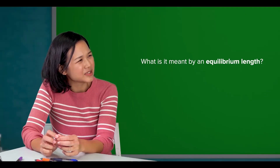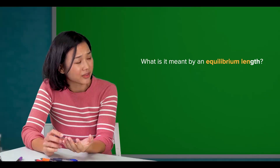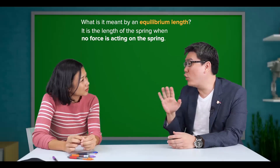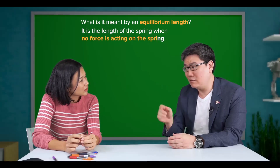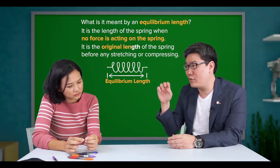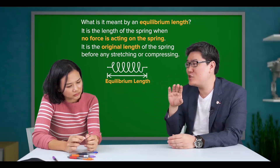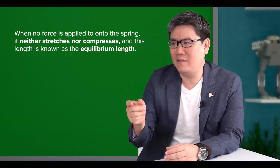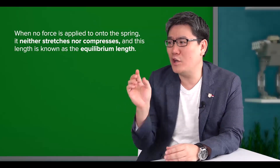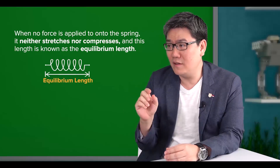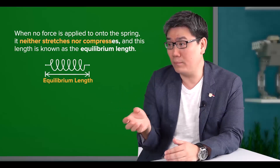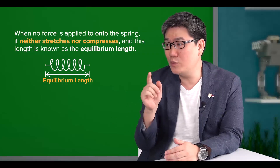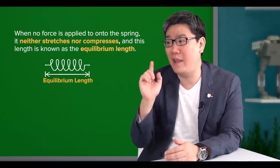What is meant by an equilibrium length? It is the length of the spring when no force is acting on it — in other words, it is the original length of the spring before any stretching or compressing. Take the spring of your pen as an example: when you are not applying any force on the spring, it neither stretches nor compresses, and this length is known as the equilibrium length.